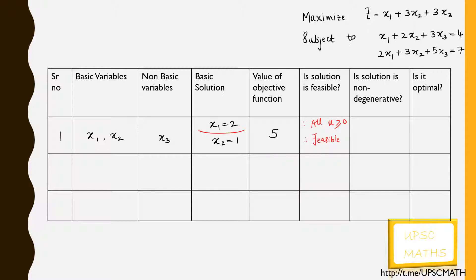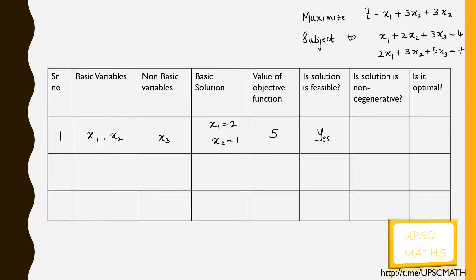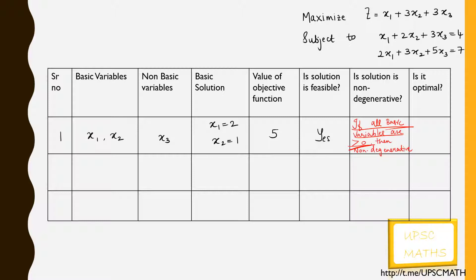Since all the values of x1 and x2 are greater than or equal to 0, the solution is feasible. Now we check whether the solution is non-degenerate. If all the basic variables are greater than 0, the solution is non-degenerate. Here x1 = 2 and x2 = 1, both greater than 0, so the solution is non-degenerate.